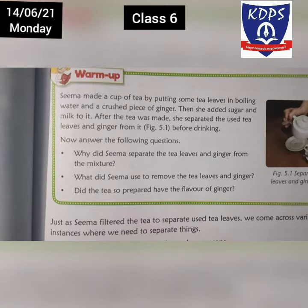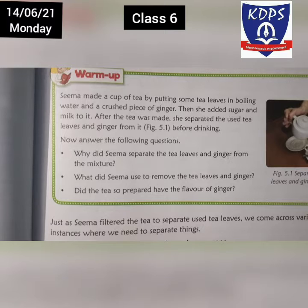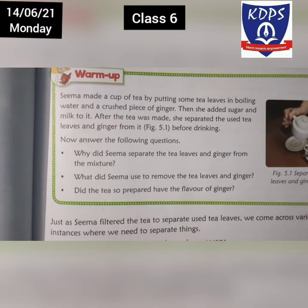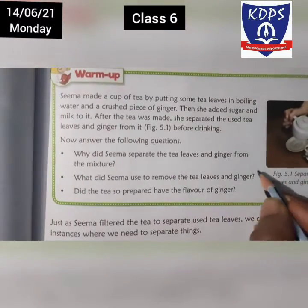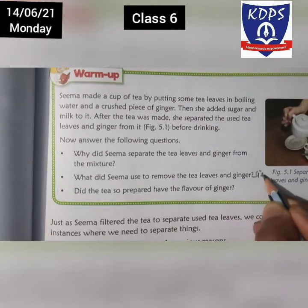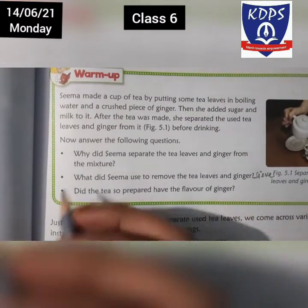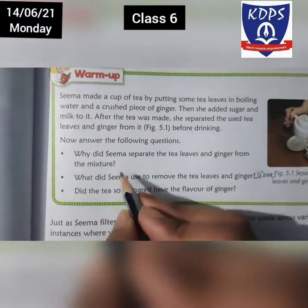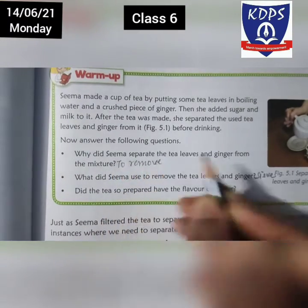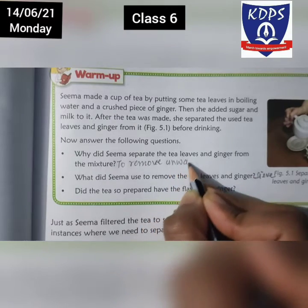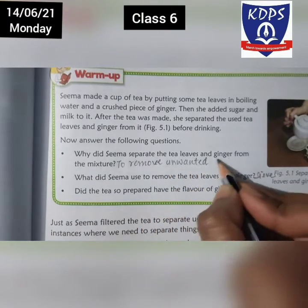The second question is, what did Seema use to remove the tea leaves and ginger? Unhon ne kaise in substances ko separate kiya? Unhon ne ek sieve ki help se in ko separate kiya. And why did Seema separate the tea leaves? To remove unwanted substances.